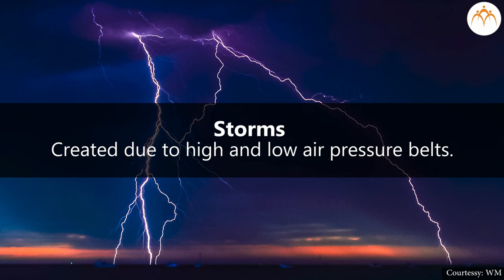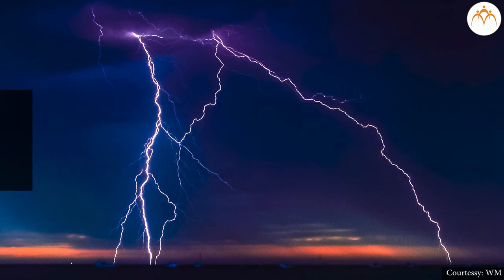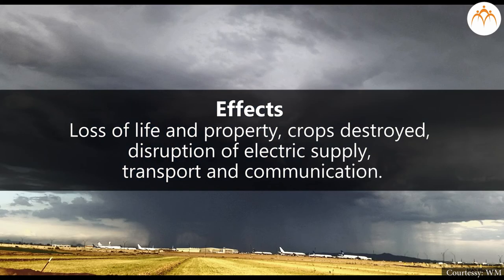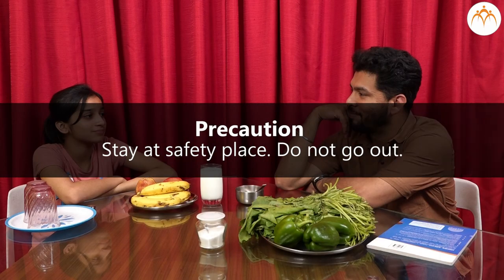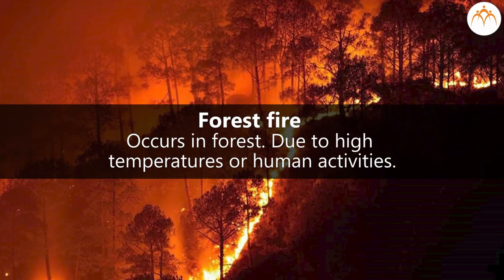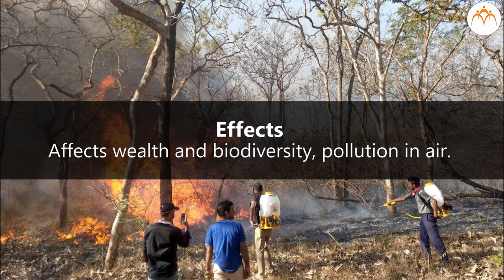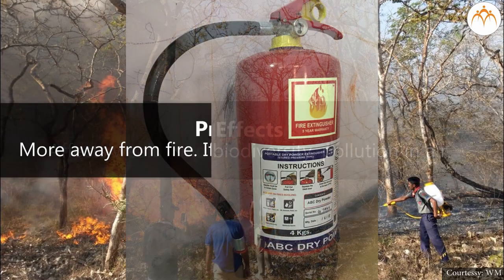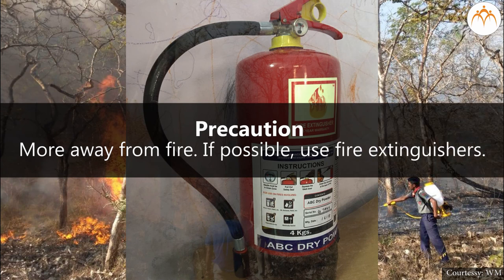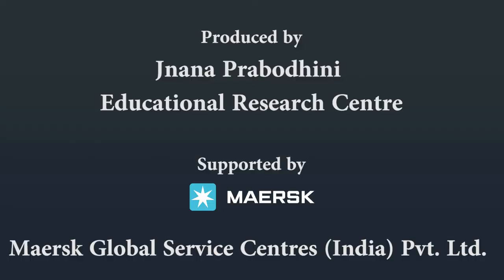Storms are created due to high and low air pressure belts. Effects include loss of life and property, destroyed crops, and disruption of electric supply, transport, and communication. Precaution: stay at a safe place and do not go out. Forest fires occur in forests due to high temperatures or human activities. Effects include damage to wealth and biodiversity, and pollution in the air. Precaution: move away from the fire, and if possible, use fire extinguishers.